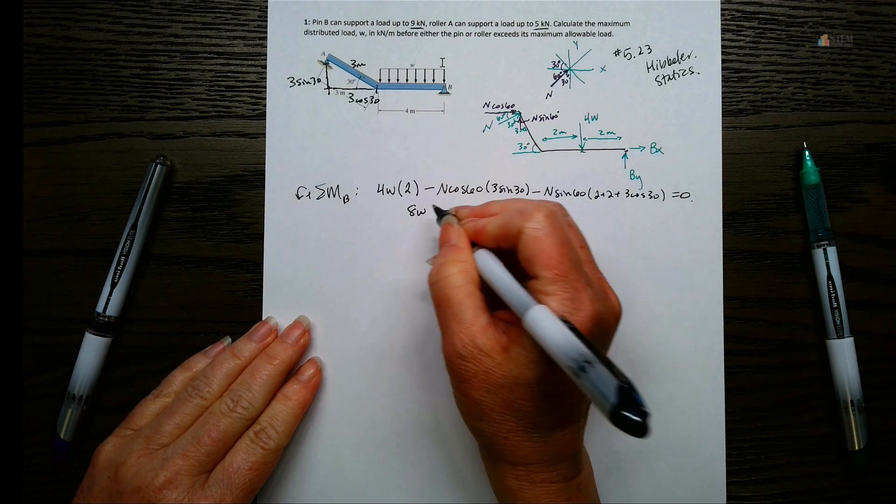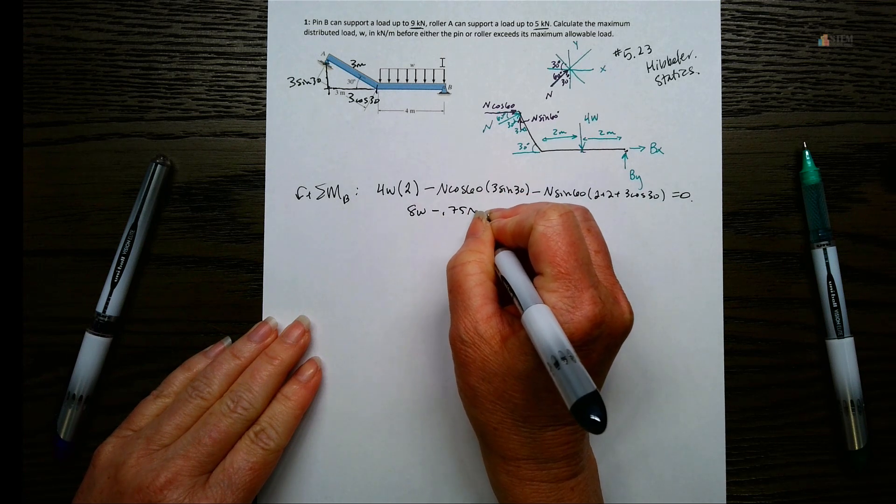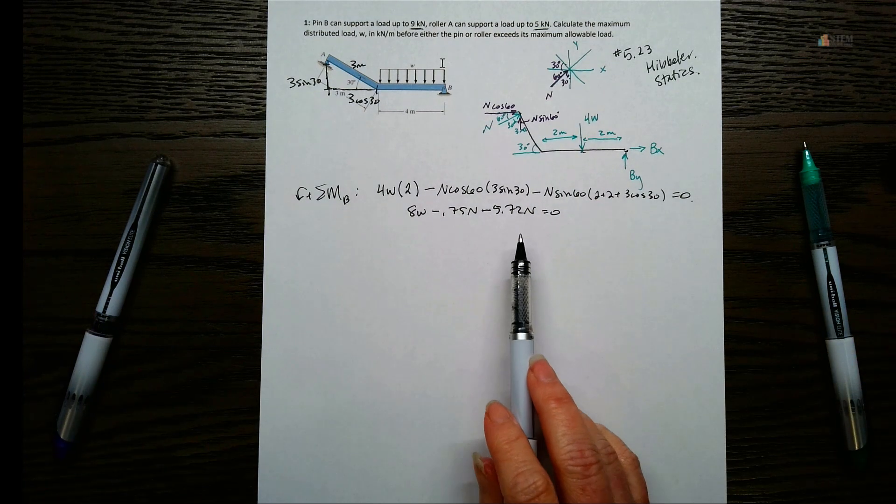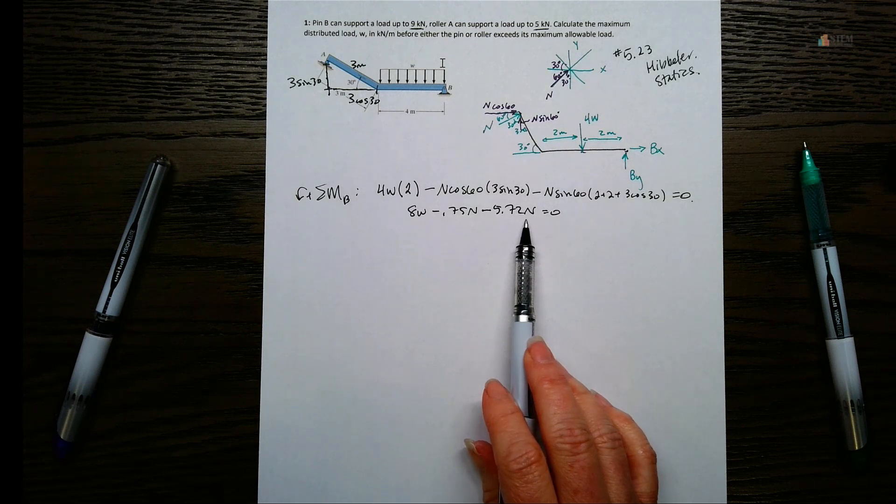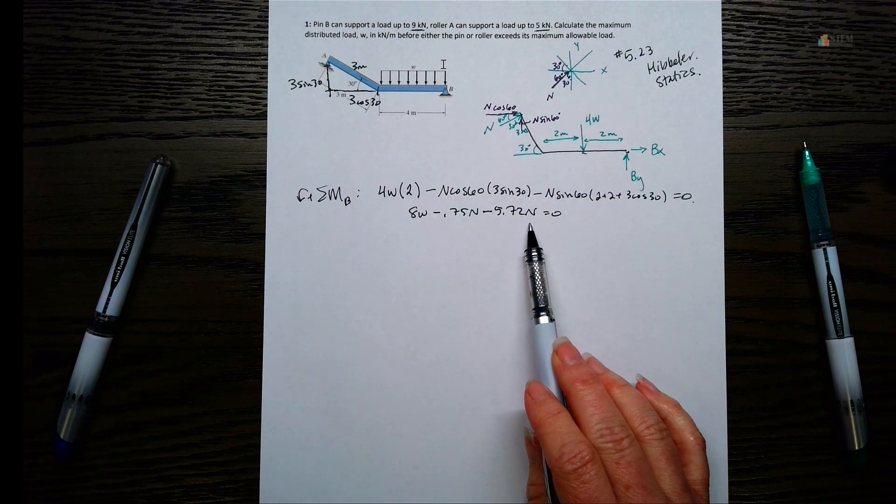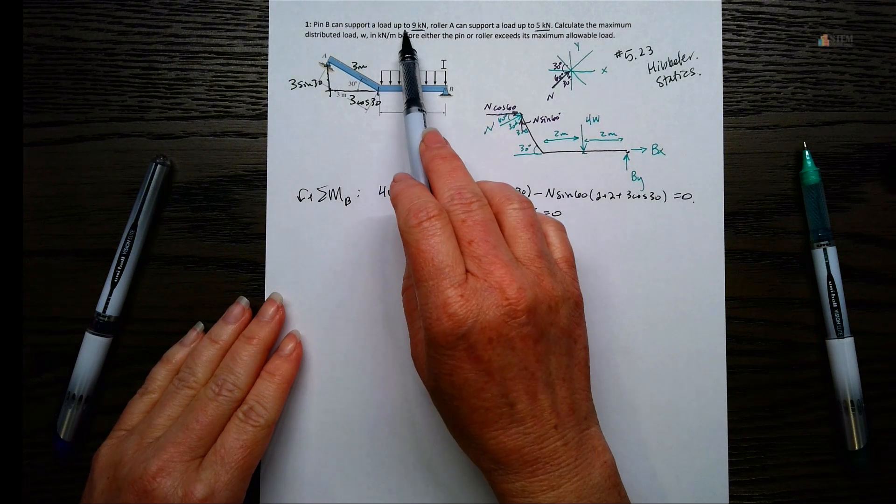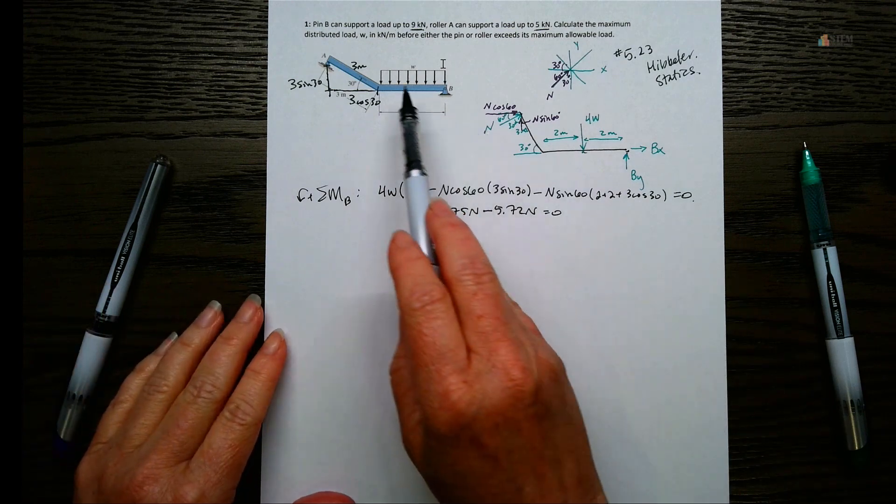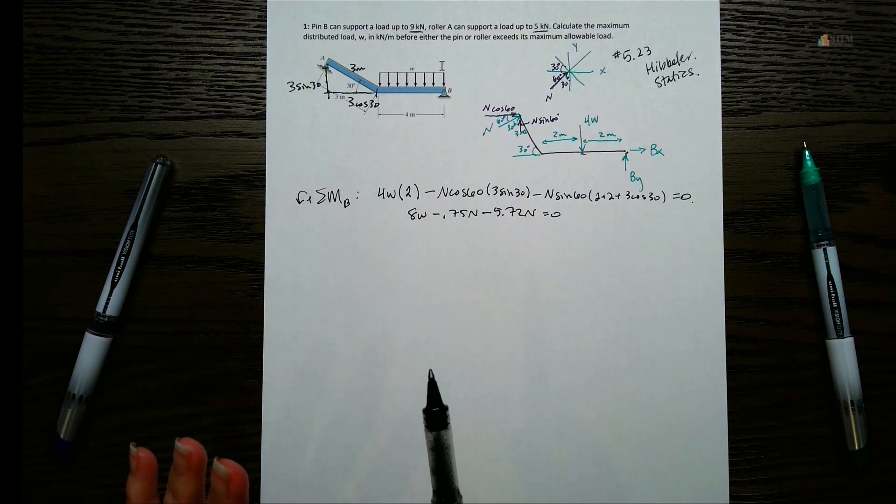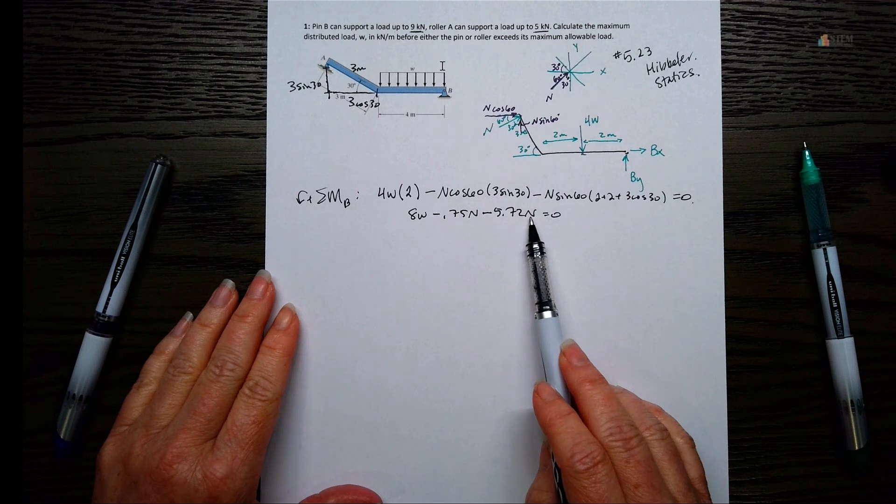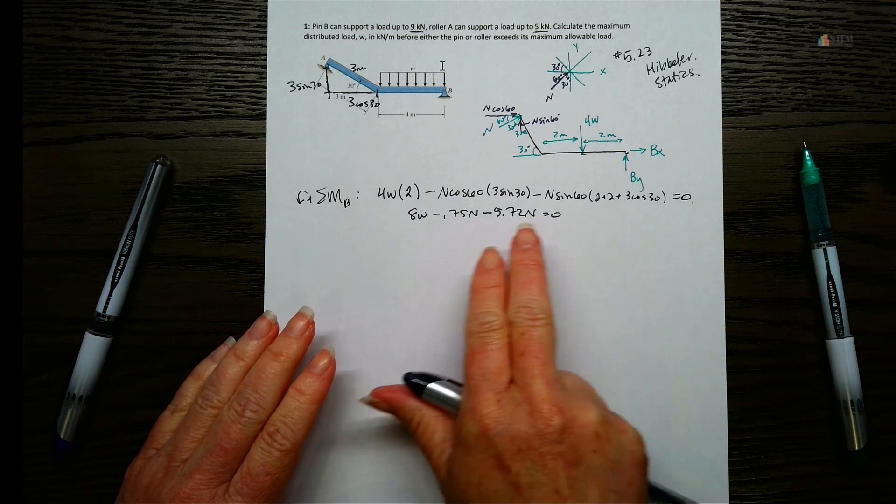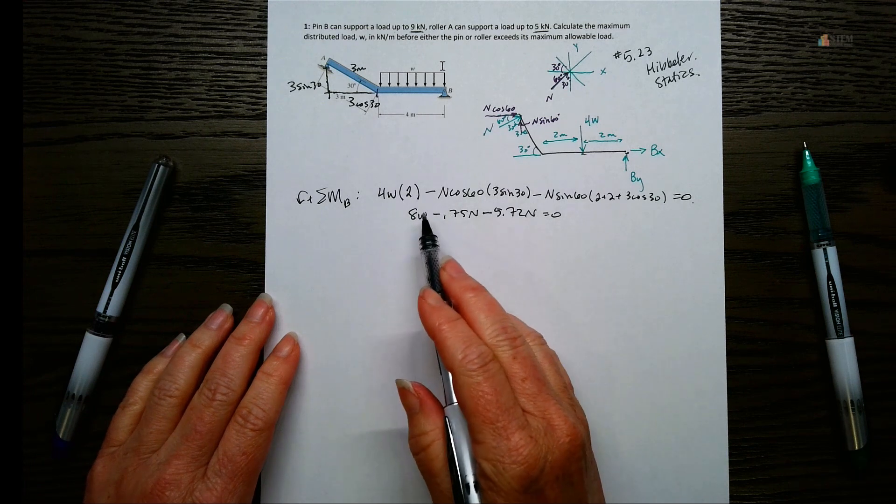Now if we go through and simplify a little bit. So we're going to have 8W minus 0.75N and then minus 5.72N equals 0. Now at this point, a lot of times people would want to plug in the value that was given for the roller at A, which is N. So they would see that roller A can support 5 kilonewtons. Let's plug 5 in. But the thing here is that we have 2 conditions. So there's nothing stating in here that the roller at A and the pin at B are both at their max support conditions. It doesn't say that anywhere. So we don't want to go ahead and plug in 5. Because then we don't have enough information to know that at this point.